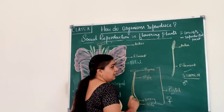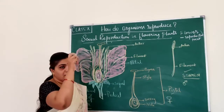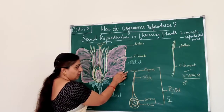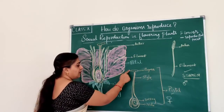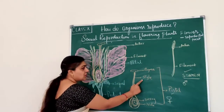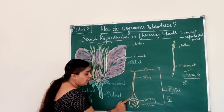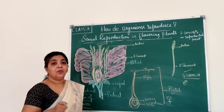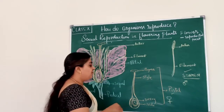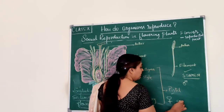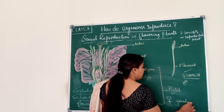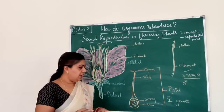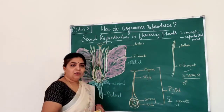Let us see the different parts of the stamen. The stamen has an anther and a filament. Coming to the pistil, it has one swollen terminal part called the stigma, a long tubular structure called the style, and a swollen part at the bottom called the ovary. Inside there is one more structure called the ovule.